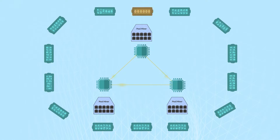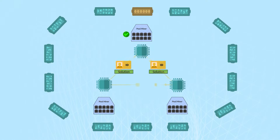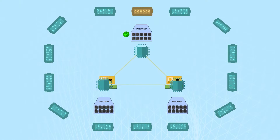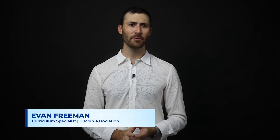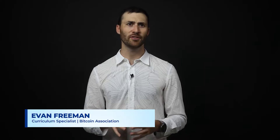MinerID enables a node operator to embed their identity within the Coinbase transaction of each block they win. The MinerID is a public key from an elliptic curve digital signature algorithm key pair, which is used to sign MinerID metadata that the node then adds into a false return output.